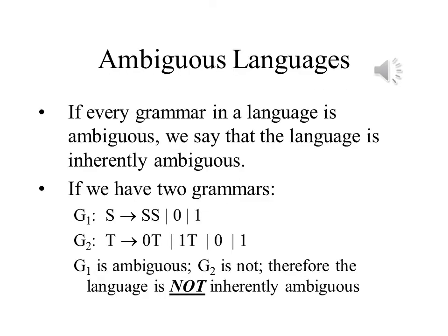Most languages, thankfully, have only one grammar that is unambiguous, but that is not necessarily the case in every instance. If every grammar for a language is ambiguous, the language is ambiguous.